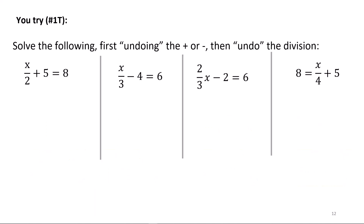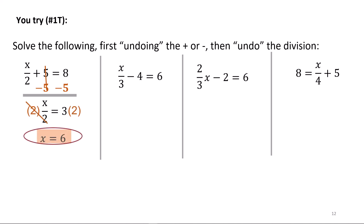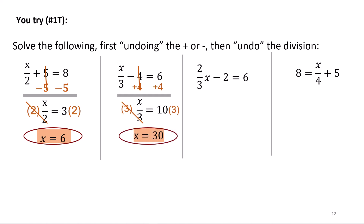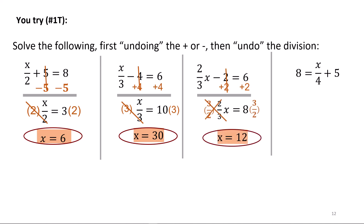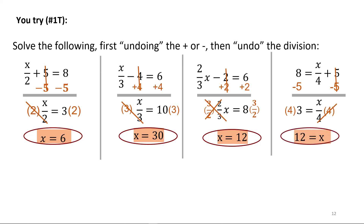Try these four, then we'll work through them together. In the first equation, subtract 5 from both sides leaving x over 2 equals 3, then multiply both sides by 2 giving x equals 6. In the second, add 4 to both sides leaving x over 3 equals 10, then multiply by 3 giving x equals 30. In the third, 2 thirds x minus 2 equals 6: add 2 to both sides giving 2 thirds x equals 8, then multiply by the reciprocal giving 8 times 3 over 2, which is 12. In the fourth, subtract 5 from both sides giving 3 equals x over 4, then multiply by 4 giving 12 as the final answer.